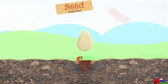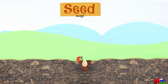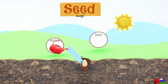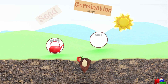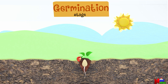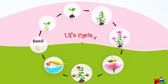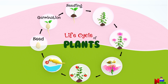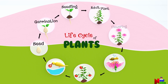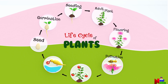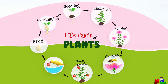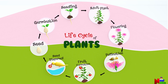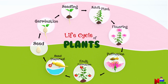Once dispersed, the seed remains in the seed stage until it finds suitable conditions to germinate and continue the whole life cycle all over again. Let's recap the different stages in a plant's life cycle: seed stage, germination, seedling stage, adult plant, flowering stage, pollination and fertilization, fruit and seed formation, seed dispersal — and then back to the seed stage again! Wow, we learned a lot today!